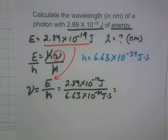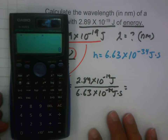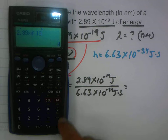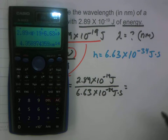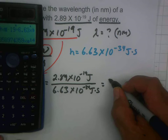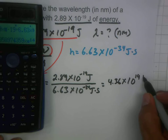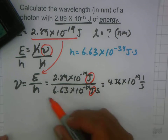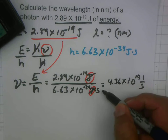Let me plug those numbers into the calculator: 2.89 times 10 to the minus 19 divided by 6.63 times 10 to the minus 34. That equals 4.36 times 10 to the 14th. The units work out because the joules in the energy cancel with the joules in Planck's constant, leaving me with per second — so the frequency is 4.36 times 10 to the 14th per second.